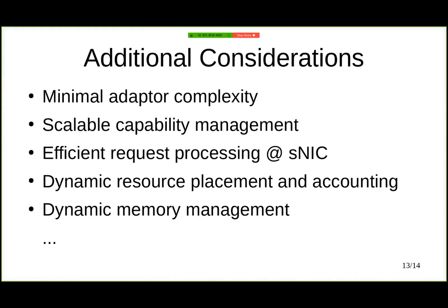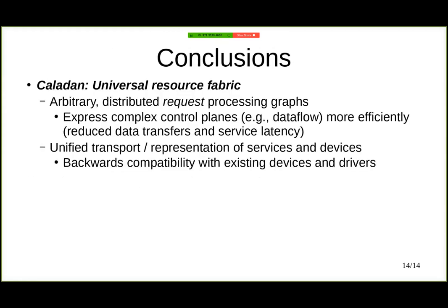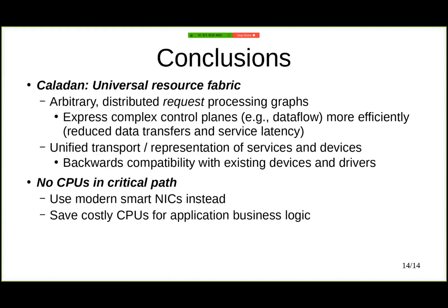To conclude, Caladan offers a universal resource fabric that supports arbitrary distributed request processing graphs, which can be used to express complex control planes like data flow, while reducing data transfers and service latency. It does so through a unified transport mechanism and representation of both services and devices in a way that is backwards compatible with existing devices and drivers. Finally, it does so without any CPUs in the critical path — instead using SmartNICs — so that costly CPUs can be used for application business logic.